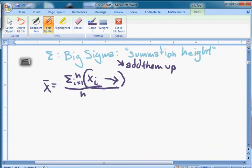We want to find the average height. We need to add them up and then divide. Okay, so that's the summation symbol. That's how X bar equals the sum from i equals one to n of these heights.